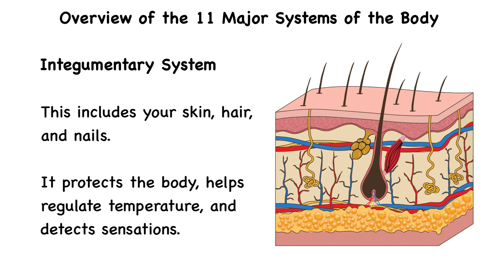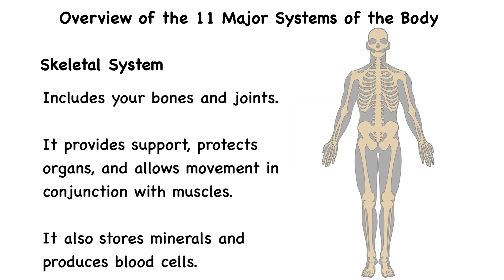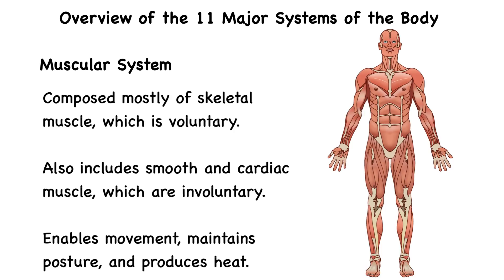First is the integumentary system. This includes your skin, hair, and nails. It protects the body, helps regulate temperature, and detects sensations. Next is the skeletal system. This system includes your bones and joints. It provides support, protects organs, and allows movement in conjunction with muscles. It also stores minerals and produces blood cells. Then we have the muscular system. This system is mostly composed of skeletal muscle, which is voluntary, meaning you have control to move it. However, it also includes smooth and cardiac muscles, which are involuntary muscles that you do not control. It enables movement, maintains posture, and produces heat.